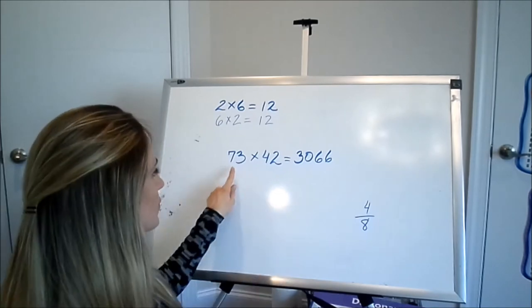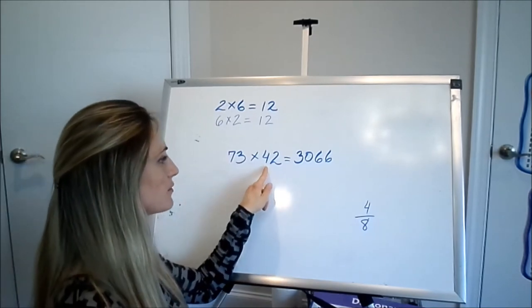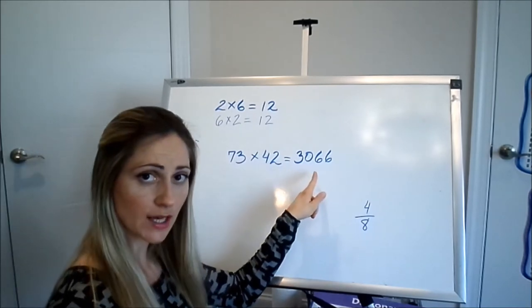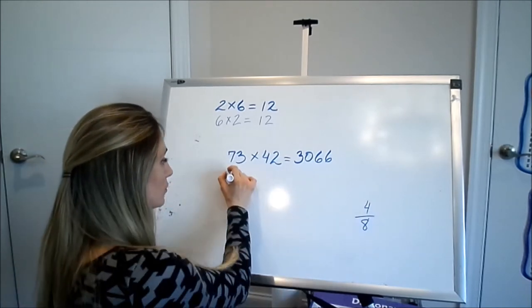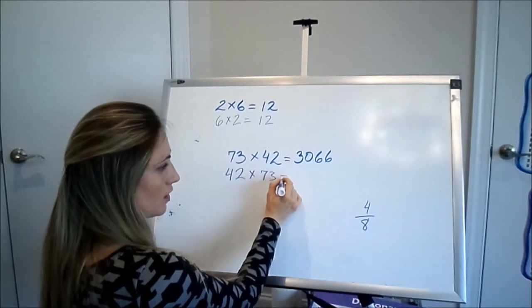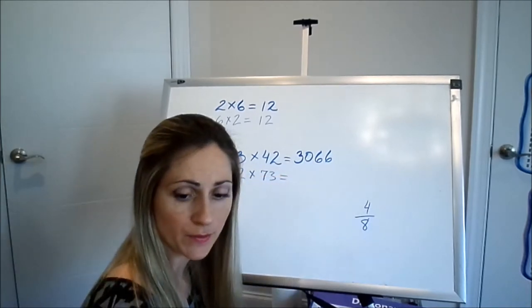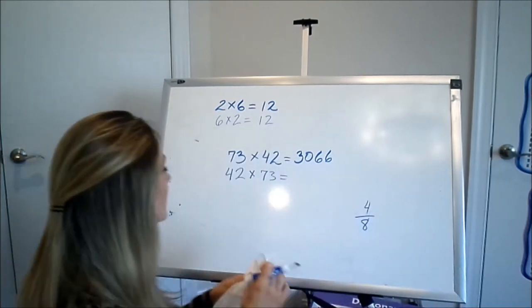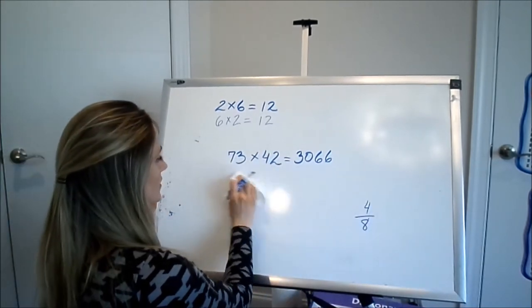Well, do you think that should work the same way? If 73 times 42 equals 3066, shouldn't 42 times 73 also equal the same number? It should. So take a look. Let's do this together.